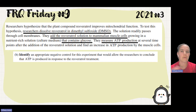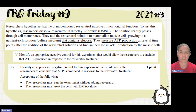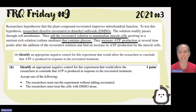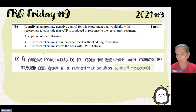So if I wanted an appropriate negative control, I would just remove the plant compound — or treat the cells with DMSO alone — because that means I only have the solvent without the independent variable. The student says the negative control would be to repeat the experiment without the plant compound.